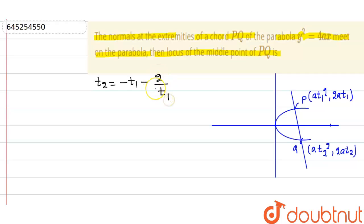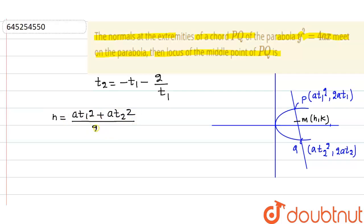Now for the locus of the middle point of PQ, let's say the midpoint is M, that is (h, k). So h can be given as h = (at₁² + at₂²)/2, which means 2h = a(t₁² + t₂²). This can be written as a[(t₁ + t₂)² - 2t₁t₂].